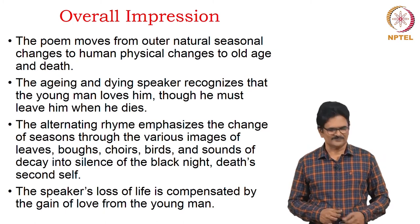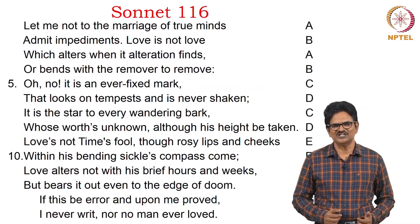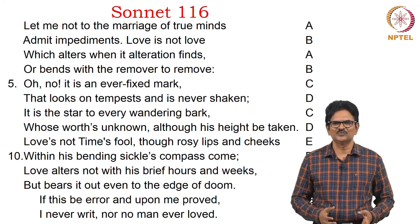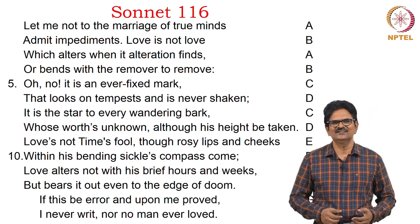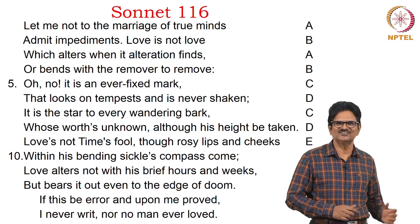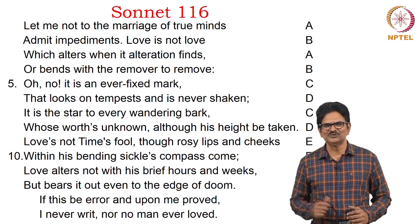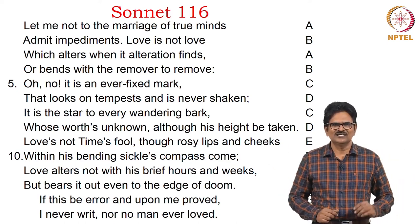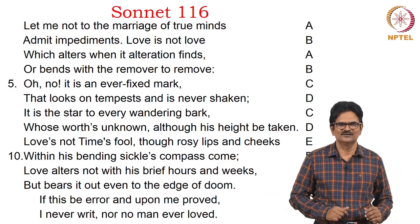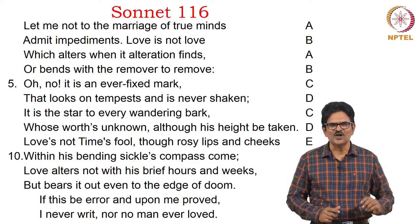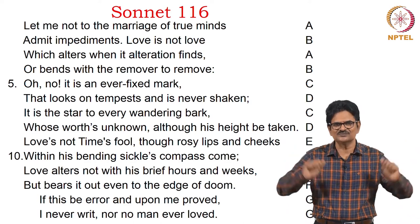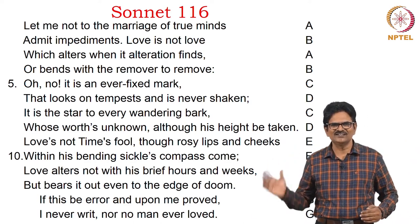We come to yet another famous poem from Shakespeare — Sonnet 116. Everyone would love to read this poem, remember this poem, recite this poem, and probably think about it very often in their life. 'Let me not to the marriage of true minds admit impediments. Love is not love which alters when it alteration finds, or bends with the remover to remove. Oh no, it is an ever-fixed mark that looks on tempests and is never shaken. It is the star to every wandering bark, whose worth's unknown, although his height be taken. Love is not Time's fool, though rosy lips and cheeks within his bending sickle's compass come. Love alters not with his brief hours and weeks, but bears it out even to the edge of doom. If this be error and upon me proved, I never writ, nor no man ever loved.'